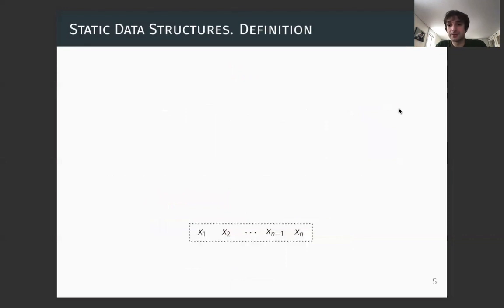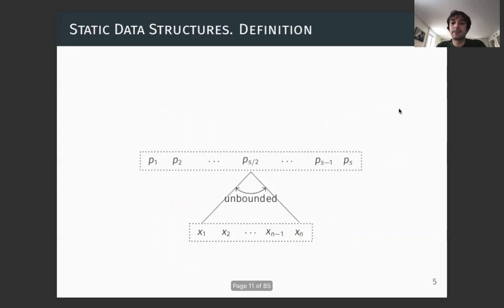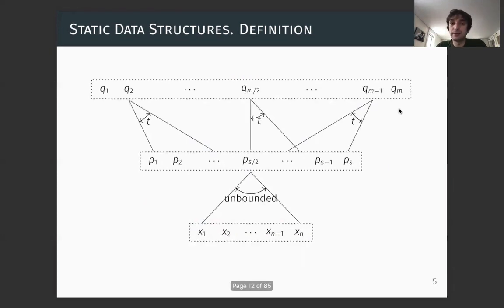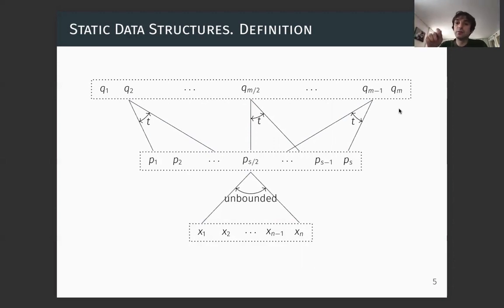Formally, a static data structure is the following. You have n inputs. You preprocess them with unbounded resources into some s memory cells. Then, given a query, you answer it in time t. Time is often measured as the number of memory cells you look at, with computation on those t memory cells given for free. There are two important parameters: s, the amount of space, and t, the query time.